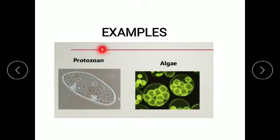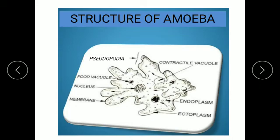You can see the examples showing protozoa and algae. Today we are going to study a protozoan, amoeba, which lives in fresh water. We can see the structure of amoeba here. Amoeba has a cell membrane, cytoplasm filled in, and a nucleus. A variety of inclusions are also present in the cytoplasm.